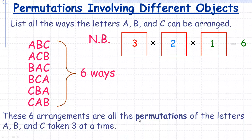These six arrangements are called all the permutations of the letters A, B, and C, taken three at a time — 'taken three at a time' just means we're using all three of them. If it said taken two at a time, then we'd only use two letters — for example, AB, AC, or BC. Permutations means arrangements where changing the order makes a different arrangement, so the same letters in different orders are different permutations.